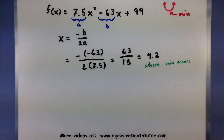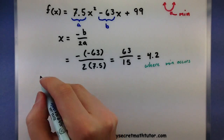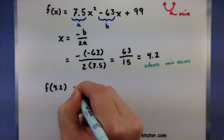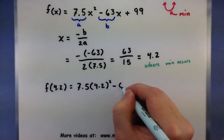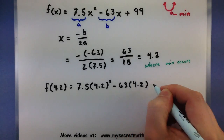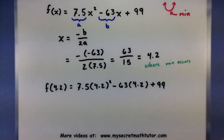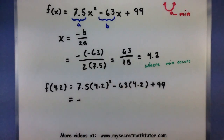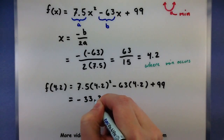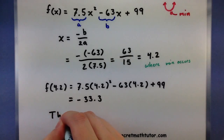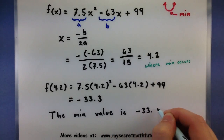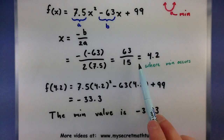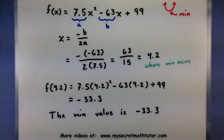If we actually want to figure out what that minimum value is, we take this 4.2 and plug it into the function. Everywhere you see an x, go ahead and put in 4.2. Even though there are a lot of terms in the function, you can always use the calculator to help with the calculations. When I did this, I got negative 33.3. So the minimum value is negative 33.3, and it happens when x equals 4.2. The process is pretty straightforward, but let's see it one more time.